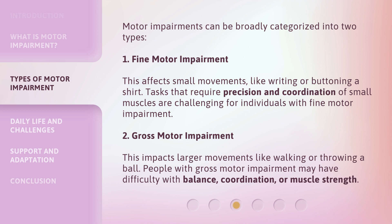Second, Gross Motor Impairment: this impacts larger movements, like walking or throwing a ball. People with gross motor impairment may have difficulty with balance, coordination, or muscle strength.